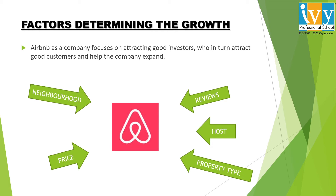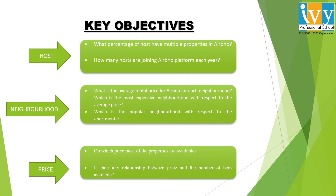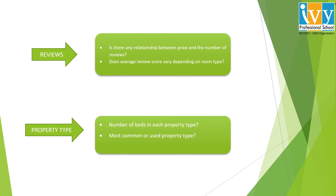Specifically talking about each category, I have picked up two important questions through which our problem statement can be answered. From the category of hosts, the top two questions could be: what percentage of hosts have multiple properties in Airbnb, or how many hosts are joining the Airbnb platform each year? From the category of price: on which price are most of the properties available, or is there any relationship between price and number of beds? From the category of reviews: is there any relationship between price and number of reviews, or does the average review score vary depending on the room type?